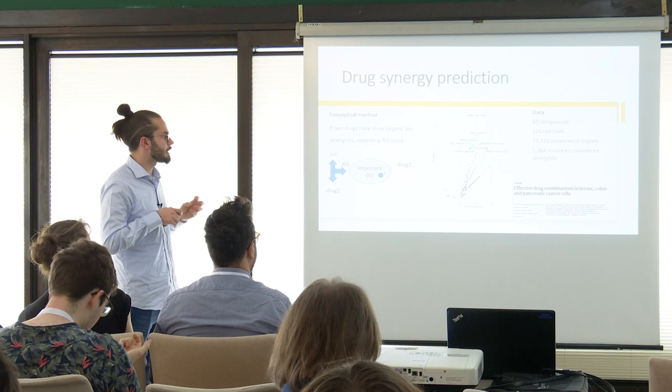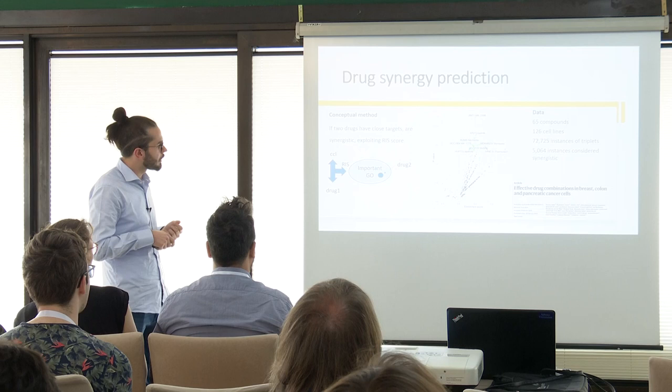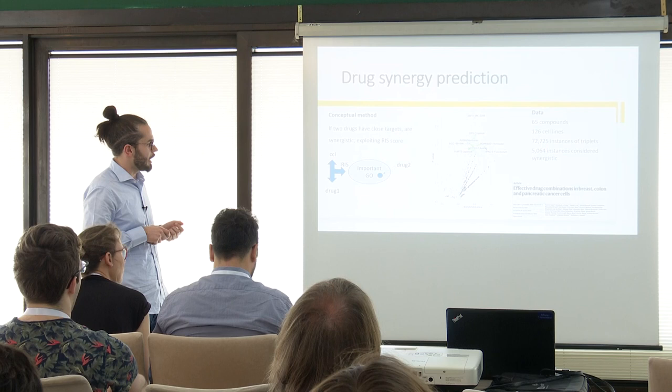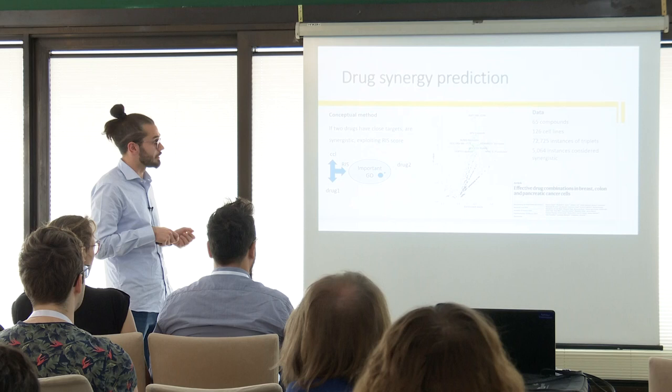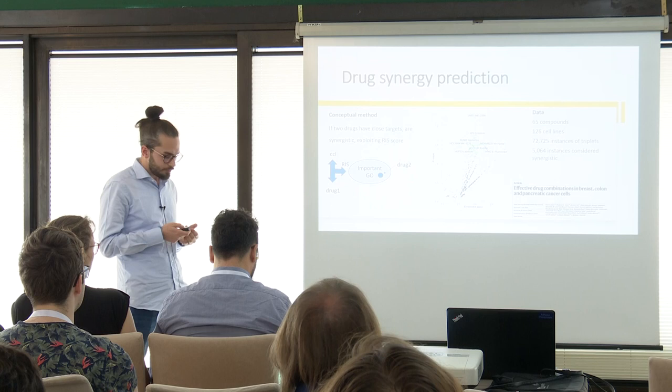We use two kinds of methods for combination prediction. The conceptual method states: if two drugs have close targets, they are synergistic. Using our RIS score for a specific cell line and drug, we compute the RIS score, take the most important gene ontologies, and mark as synergistic the drugs that target a gene in those gene sets.